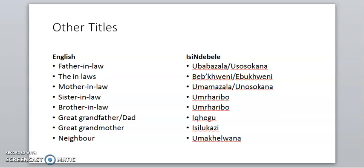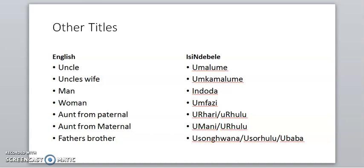Neighbor is umakeluan. Uncle is umalume, and uncle's wife is umkamalume — there is no 'malumegazi' in isiNdebele, that's Zulu or Swati. In isiNdebele we say umkamalume or umgamalume. Man is indoda and woman is umfazi, just like other Nguni languages.